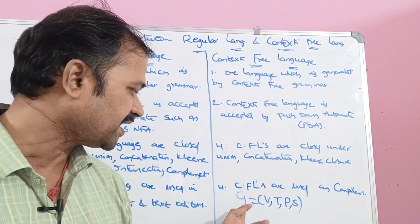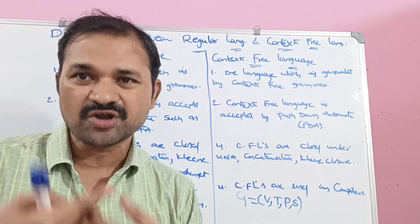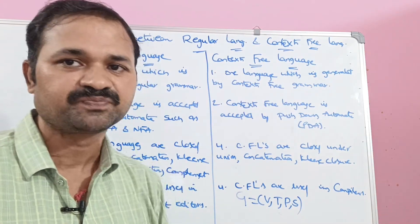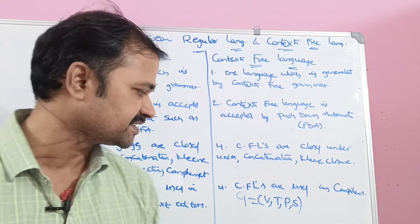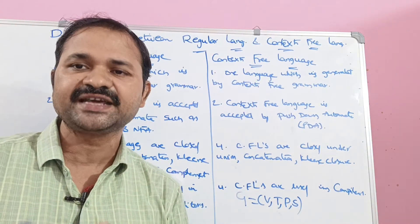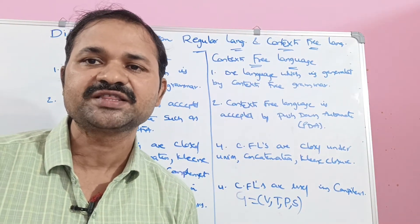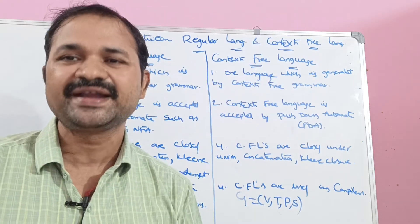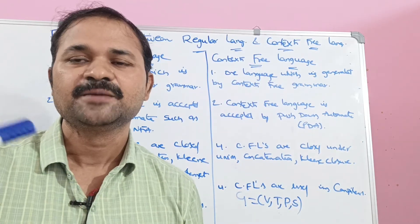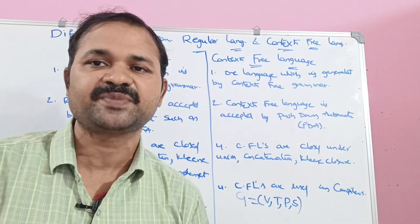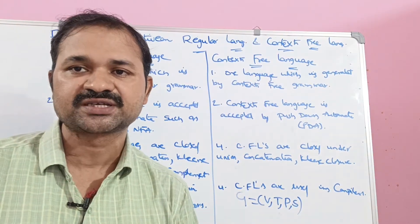Where V is a variable, also called non-terminals, represented by uppercase letters. T stands for terminal symbols — terminals are lowercase letters, digits, or symbols such as plus, minus, star, left parenthesis, right parenthesis, and likewise. P means production rules.